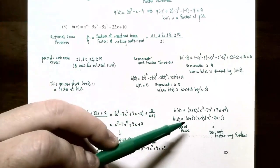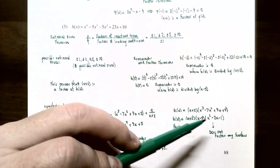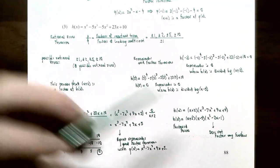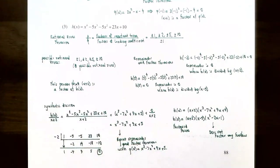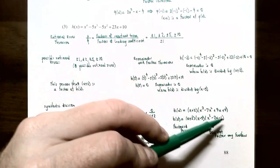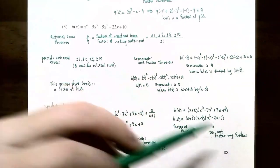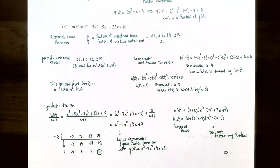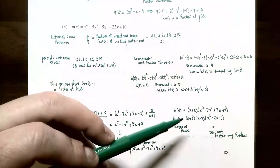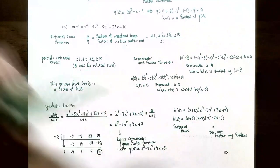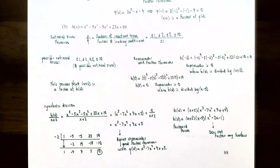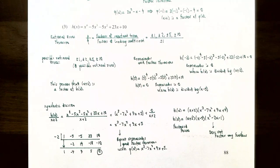The complete factored form of h(x) is h(x) = (x + 2)(x − 5)(x² − 2x − 1). The last factor x² − 2x − 1 does not factor further — there are no two integers that multiply to −1 and add to −2 — so it is an irreducible quadratic over the integers.